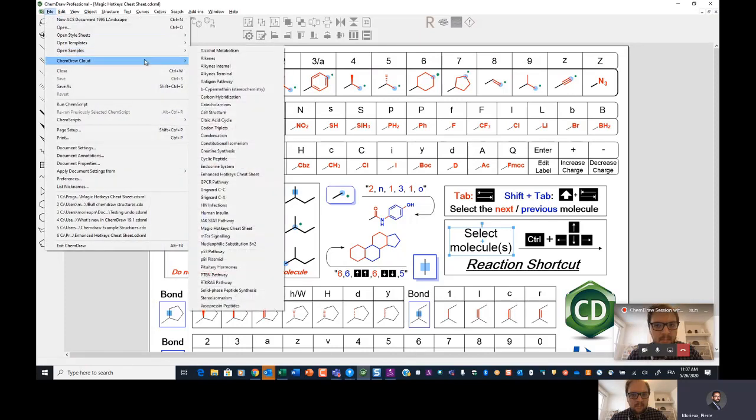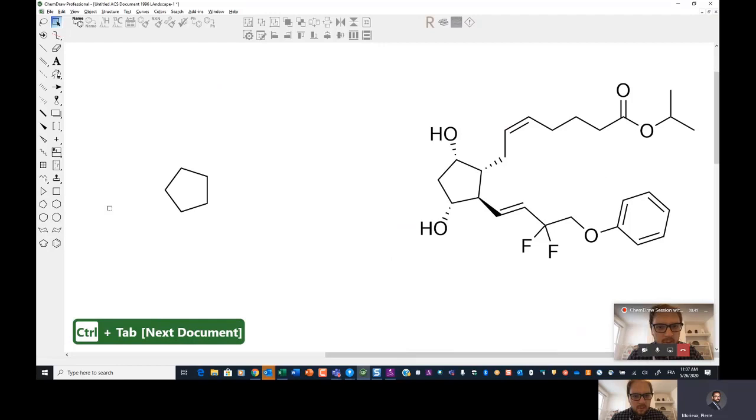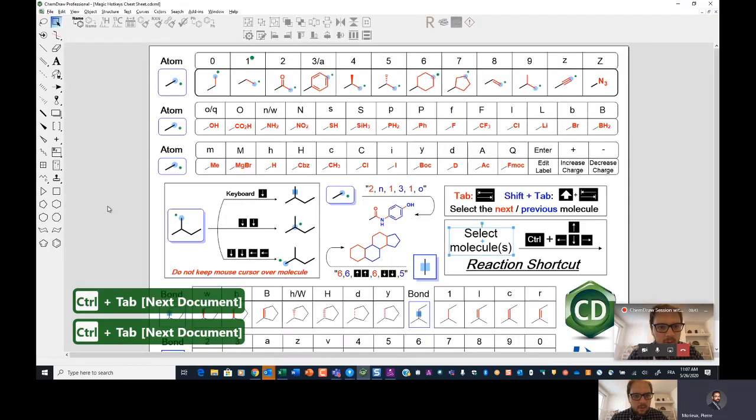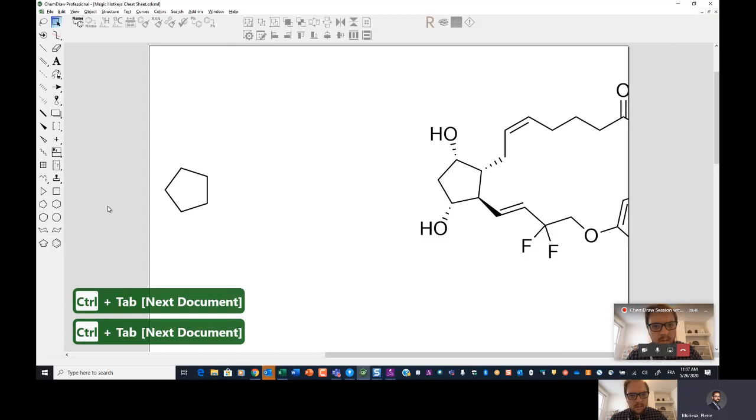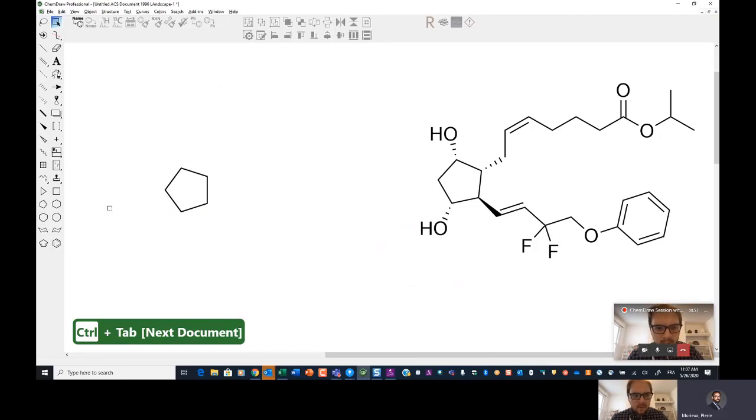File, open samples, and then magic hotkeys cheat sheet, or if you are on pre version 19, it's called the enhanced hotkeys cheat sheet. It's a little less elaborate, but it also covers the basics. So we'll do that one thing. So that's a sort of a shortcut on PC control tab is actually switching from one document to another.